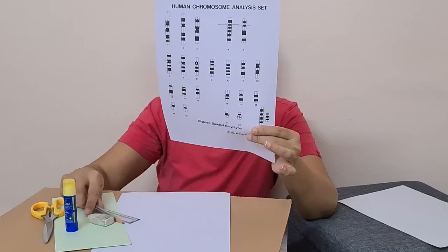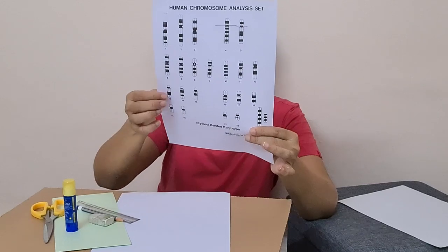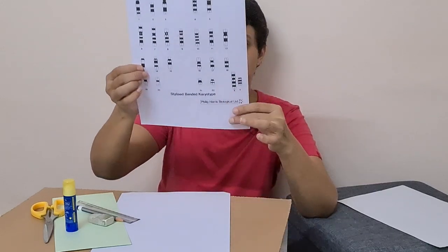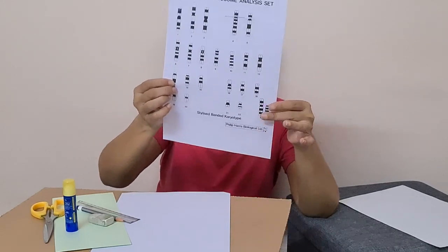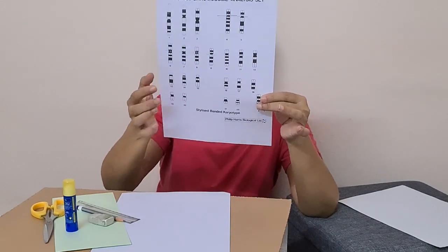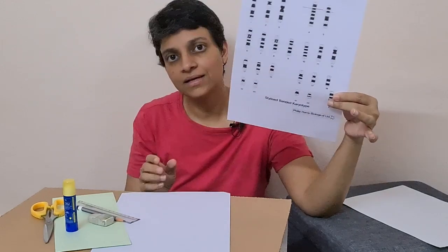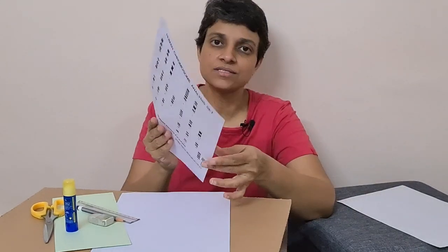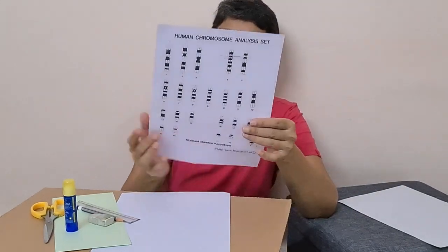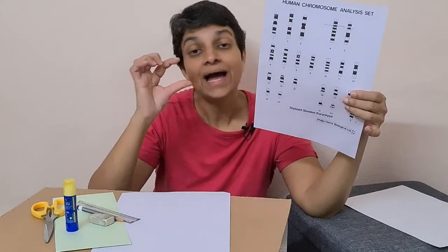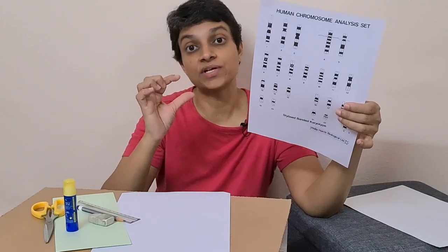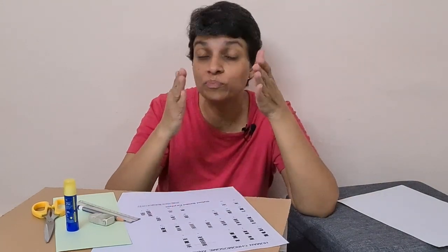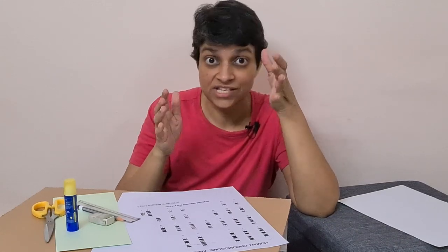Group D has three pairs and these are large acrocentric. Large acrocentric chromosomes belong to group D.